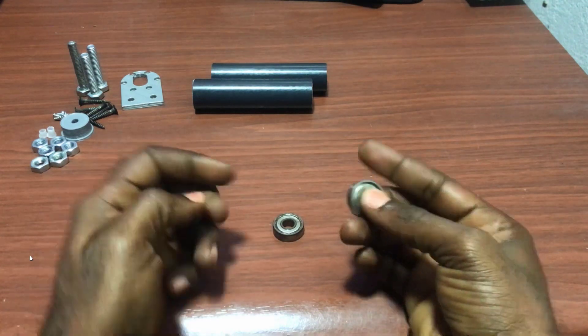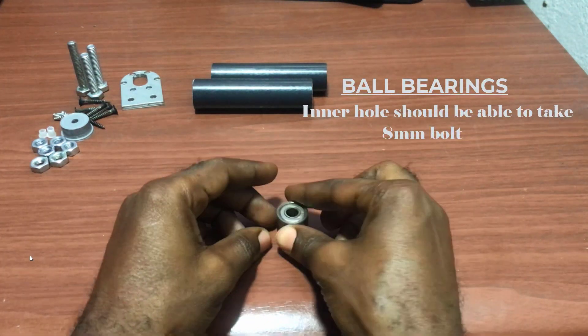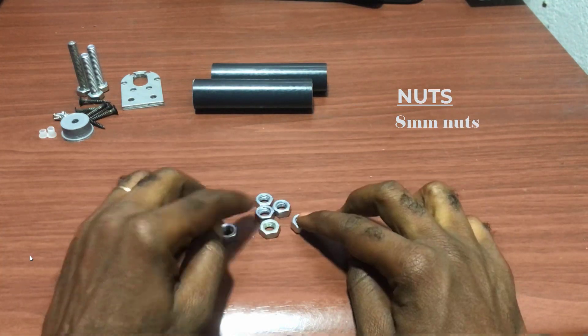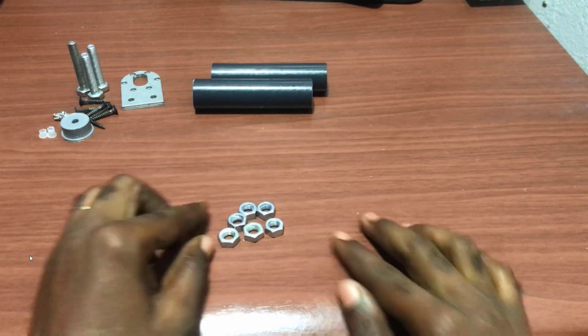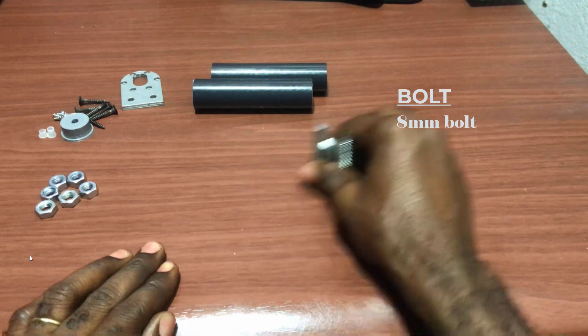So we will need some ball bearings. They need to be free. We will need nuts, six of them, and we will need three bolts.